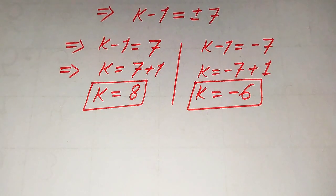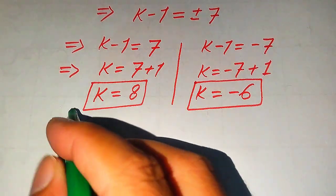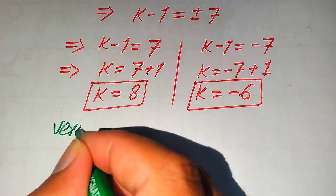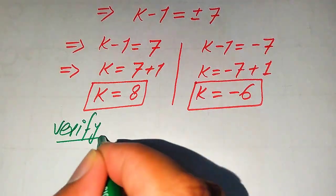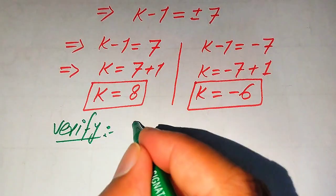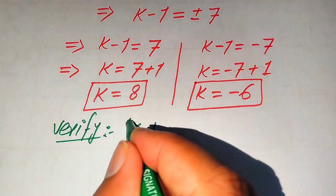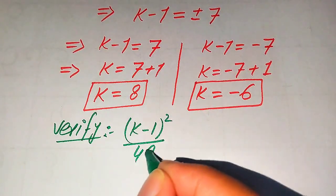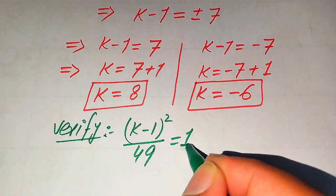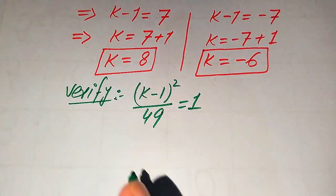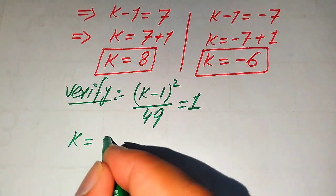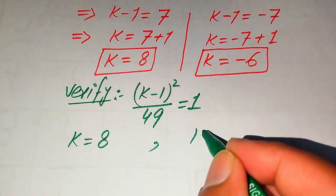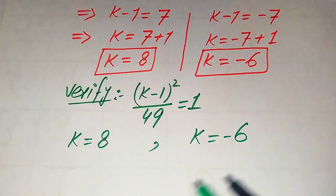Now we need to verify that both these two values are solutions or extraneous roots. For verification, we copy down the given equation: (k minus 1) squared divided by 49 equals 1. On one side we will verify k equals 8, and on the other side we will verify k equals minus 6.